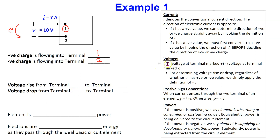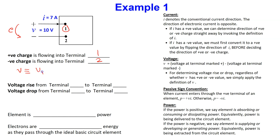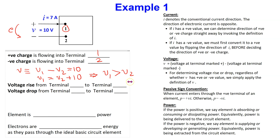To determine the voltage relationships, we invoke the definition of V. V is always defined as the voltage at the terminal marked plus, minus the voltage at the terminal marked minus. For this example, V equals V1 minus V2, which has a value of 10 volts. Rearranging, V1 equals V2 plus 10, which implies voltage at terminal 1 is greater than voltage at terminal 2. Therefore, there is a voltage rise going from terminal 2 to 1, and a voltage drop going from terminal 1 to 2.